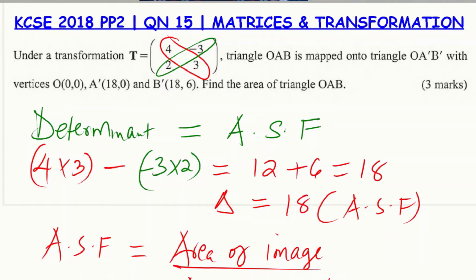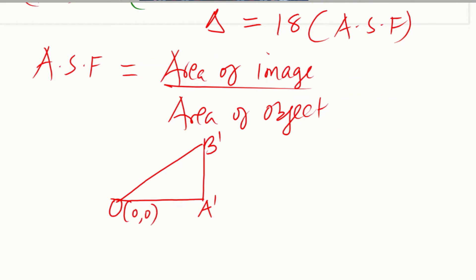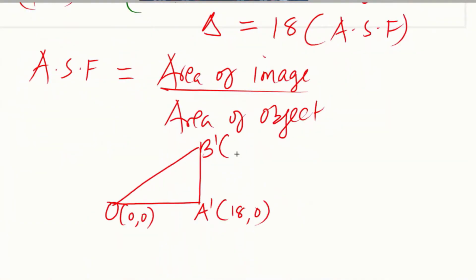Looking at the image triangle OA'B' with coordinates O(0,0), A'(18,0), and B'(18,6), we can do a rough sketch. From this sketch, you notice that this forms a right-angle triangle. The vertical displacement from 0 to 6 gives a height of 6, and the horizontal displacement from 0 to 18 gives the base of 18.